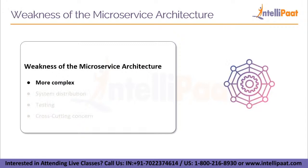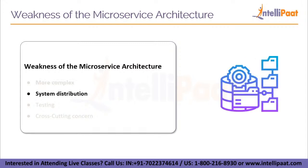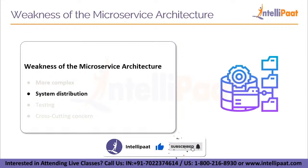After discussing the strengths, let us discuss some weaknesses. First, it is more complex. Because a microservices architecture is a distributed system, you must choose and configure all of the modules and databases. Furthermore, if an application has independent services, each one must be deployed separately. System distribution: because a microservices architecture is a complicated system with various modules and databases, all connections must be properly managed.